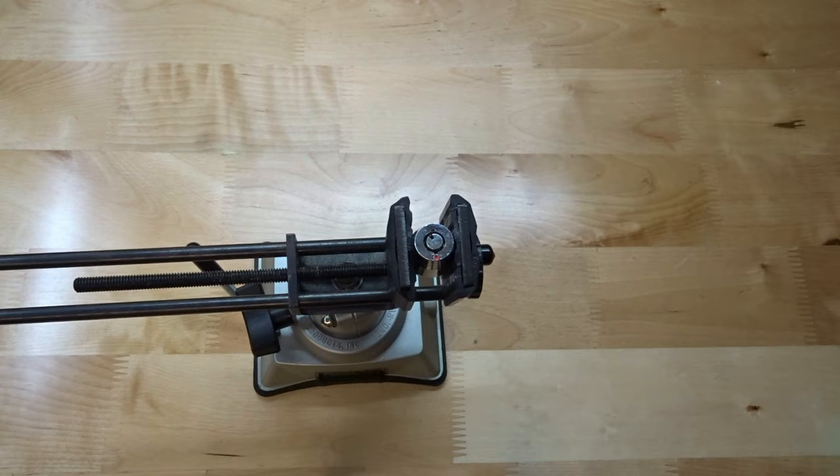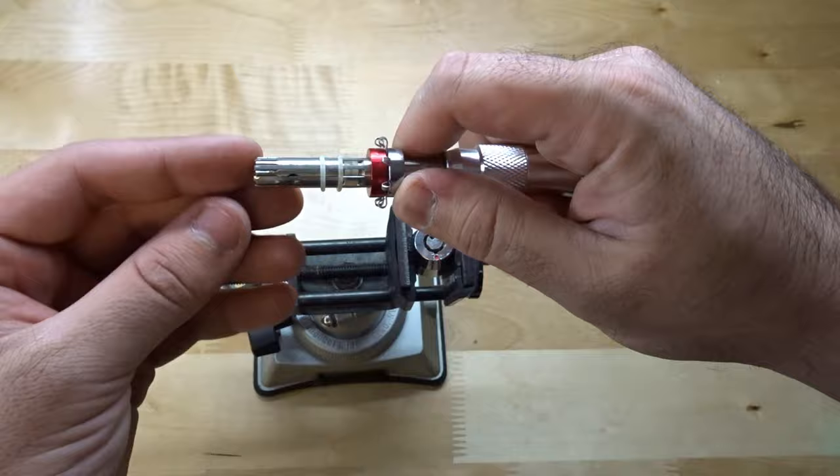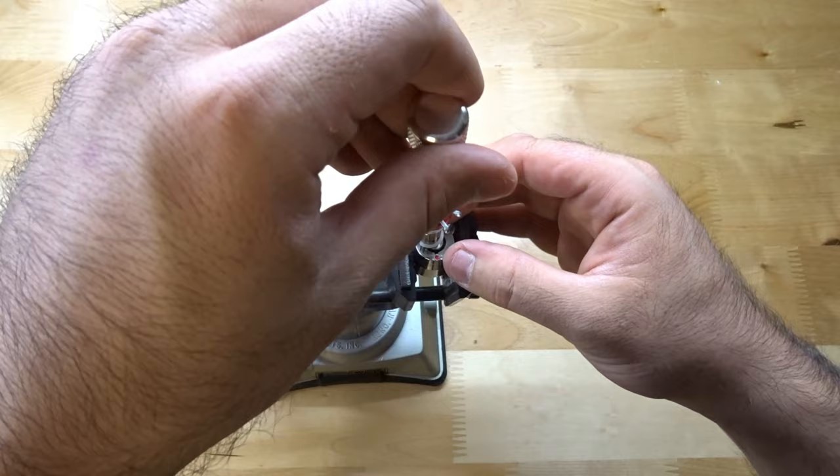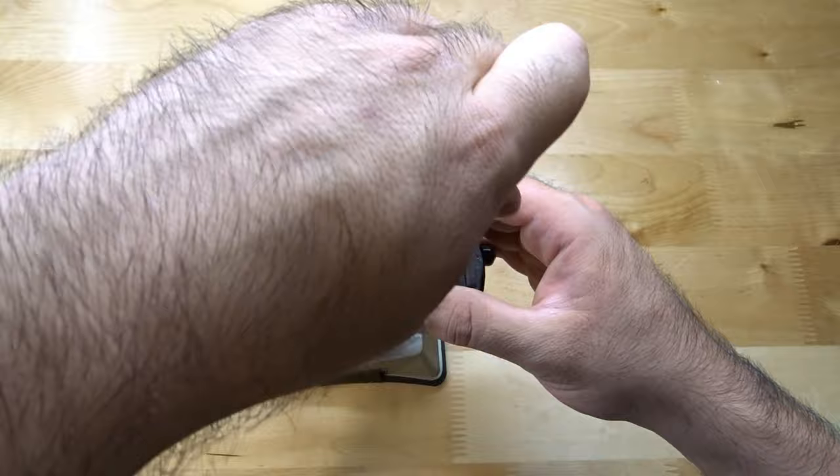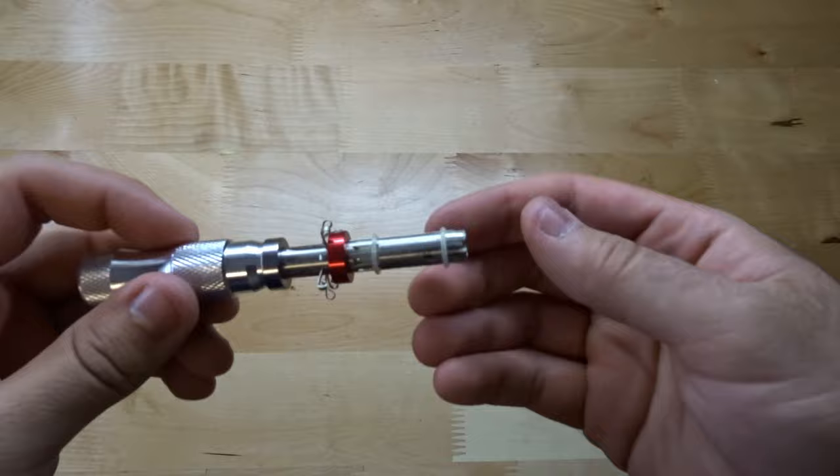The next thing we are going to do is we are going to use our tubular impressioning tool. We are going to zero it out, and we are going to make sure we have only a couple of bands on here, just enough to keep the little prongs in plane. And then what we are going to do is we are going to take it and push down on the lock. This is going to give us the direct bitting of the key. And there you can see we have impressioned the key.